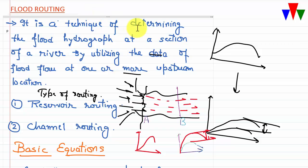There are two methods of routing: reservoir routing and channel routing. In reservoir routing, water is stored in a reservoir and thereafter discharge is released, reducing the peak. In channel routing, water is allowed to pass through a channel or river where storage temporarily increases and as the flood recedes the storage depletes, leading to reduction in peak discharge at the output section.